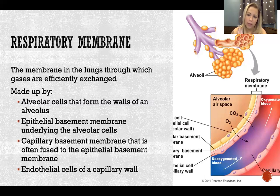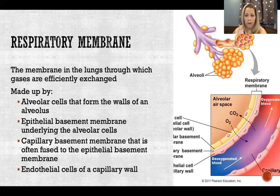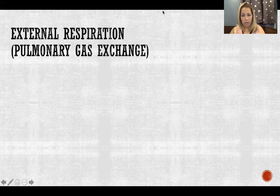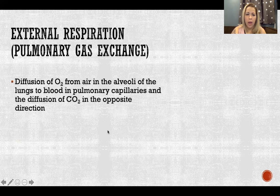We have two layers of cells: one layer making up the walls of the alveoli, one layer making up the walls of the capillaries, and two basement membranes. The epithelial tissue secretes material that helps them glue together, so they stay pressed together. This means the air in the alveoli is separated from the blood in the capillaries only by those two layers of cells and their basement membranes. At this location — the respiratory membrane — external respiration, also called pulmonary gas exchange, takes place.